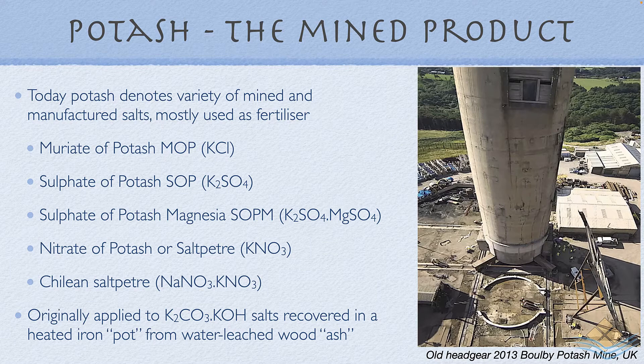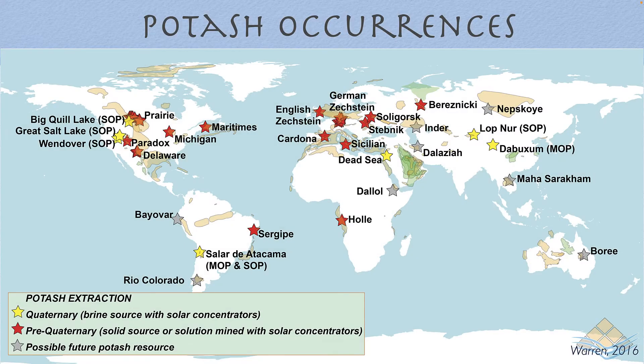The major sources of the various potash salts are: potassium chloride, also known as muriate of potash or MOP; potassium sulfate, known as sulfate of potash or SOP; the sulfate of potash magnesia, SOPM; potassium nitrate, known as saltpeter and also Chilean saltpeter from the sodium nitrate-potassium nitrate salt. These are different usages of the term potash compared to its original usage describing various potassium carbonate and potassium hydroxide salts recovered by boiling water-leached wood ash.